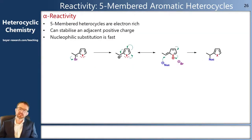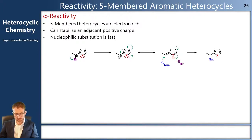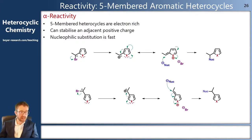As well as affecting the reactivity of the ring itself, the electron-rich system affects the reactivity around the ring. If there's a good leaving group adjacent, or alpha, to our five-membered heterocycle and it leaves behind a positive charge, that positive charge can be stabilized by the lone pairs on the heterocycle. We can push the arrows around and show resonance forms where the charge is spread out over all six atoms, which means that SN1-type reactions or nucleophilic substitution reactions in general are fast. This applies to positions at both the 2-position and the 3-position.